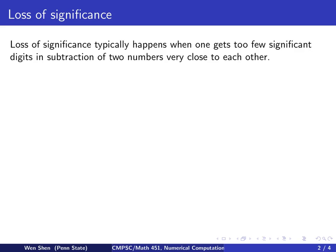The significant digits of a number that you write down with finite decimal places will be the number of digits starting from the first non-zero to the last digit being presented. Loss of significance could happen typically when you get too few significant digits, and typically in subtracting two numbers very close to each other in value. We now demonstrate this phenomenon through a simple example.